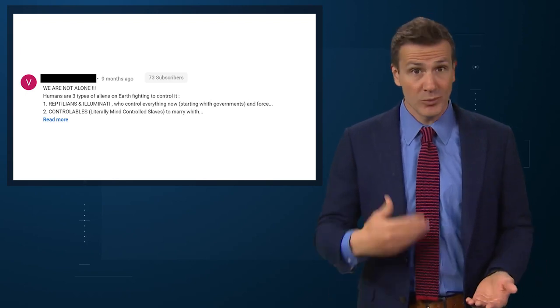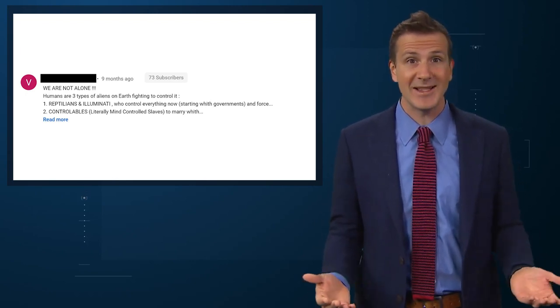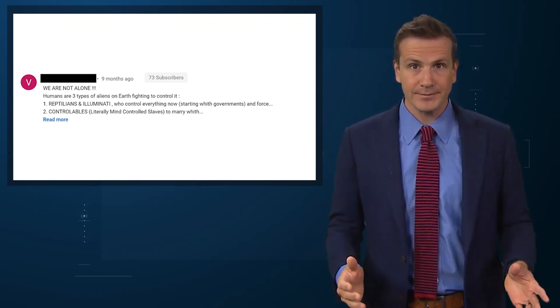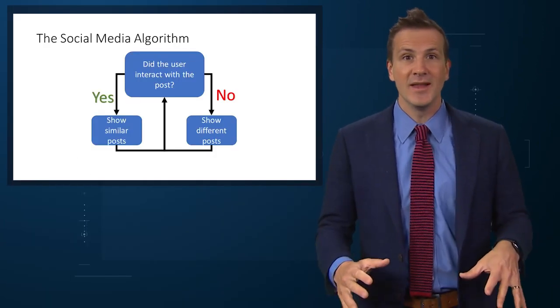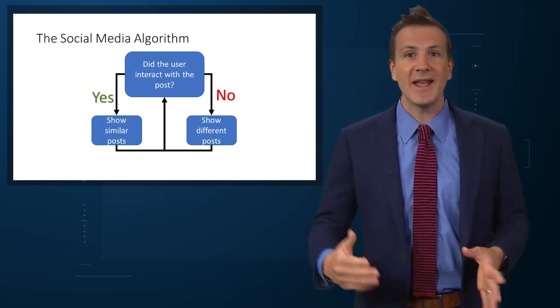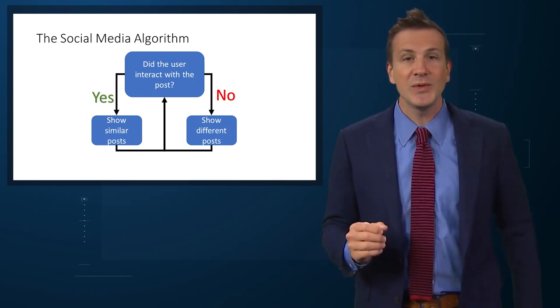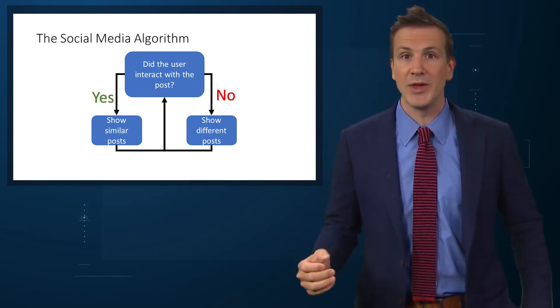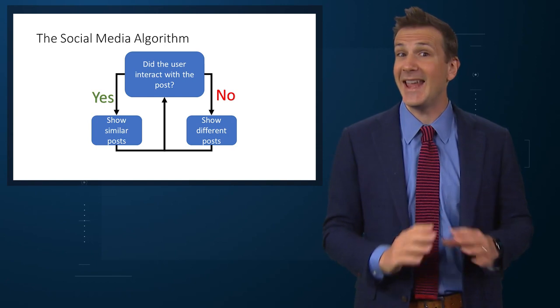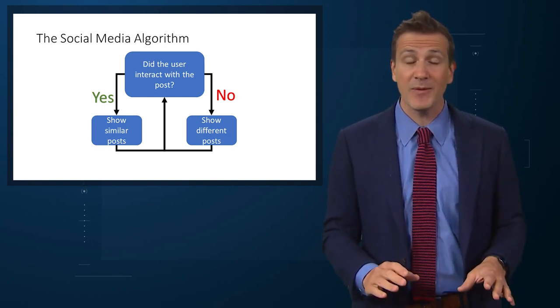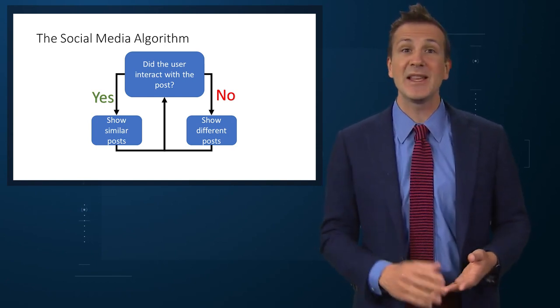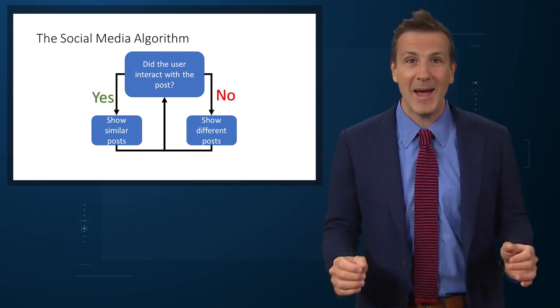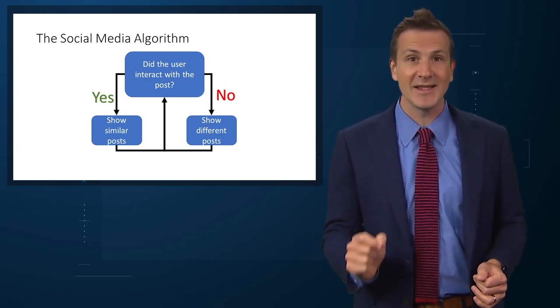Social media actually exploits some really well-researched cognitive biases that affect us all. At the heart of the issue is the algorithm. Social media algorithms are all designed to show you stuff similar to stuff you've engaged with before. They are designed to maximize engagement with the service – not to provide you with truth, or what is best for you, or what will make you happy. The goal is to keep your eyes on the website.